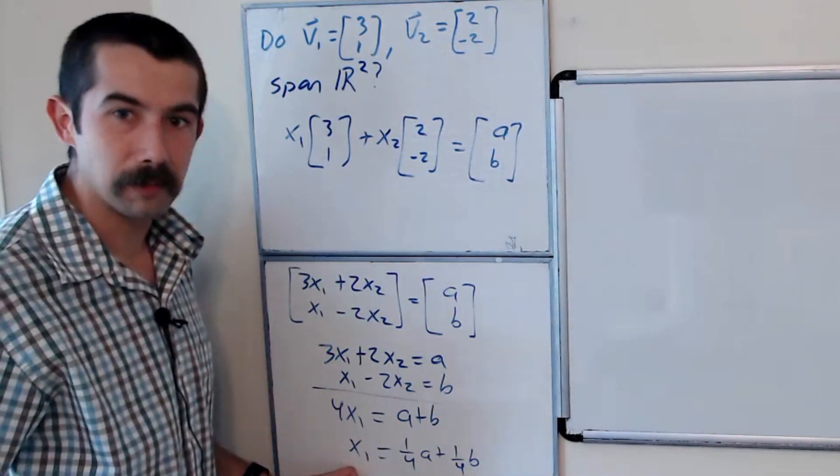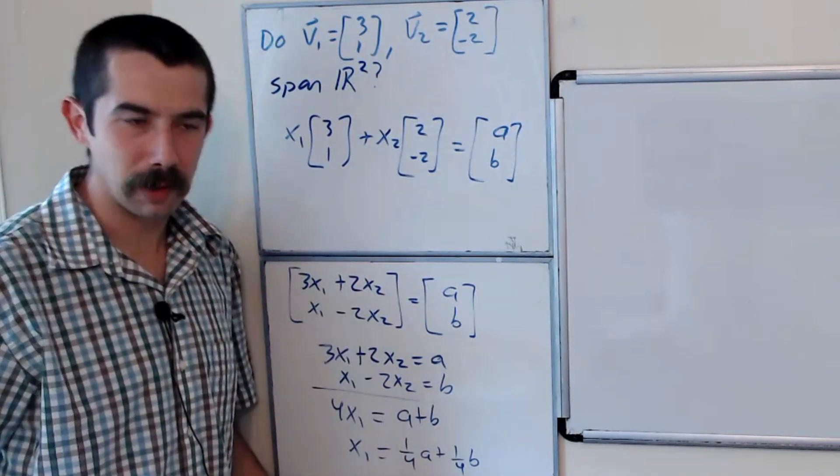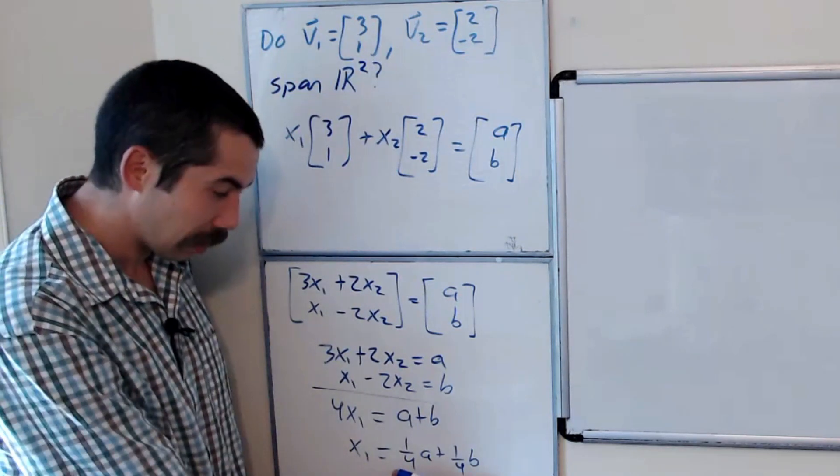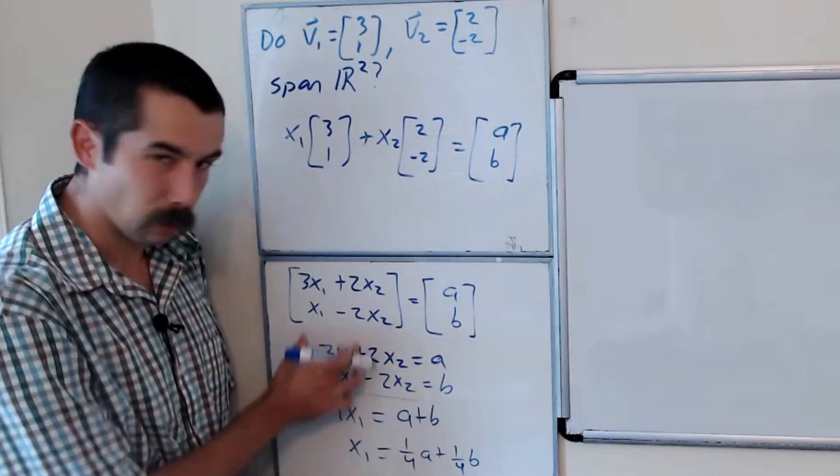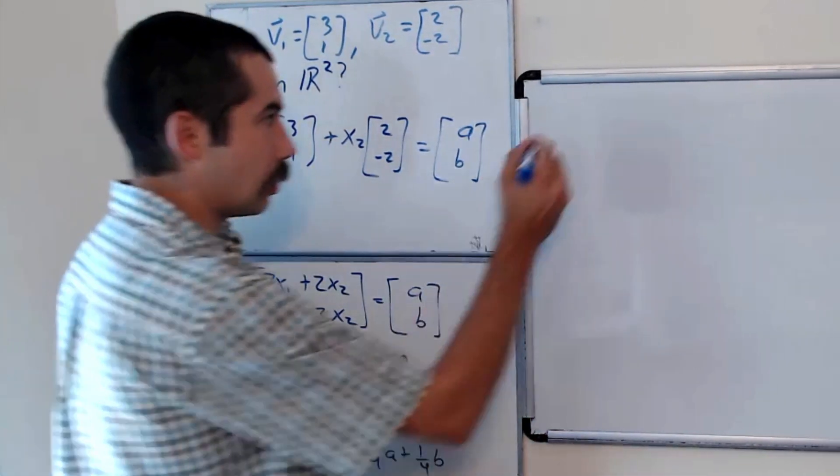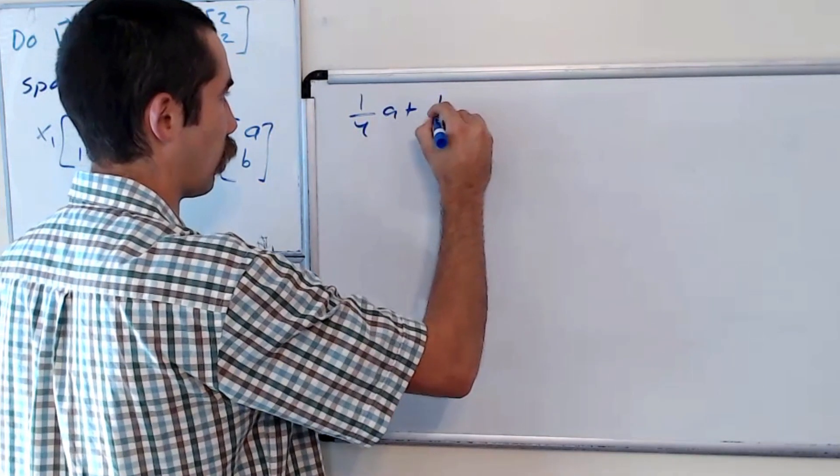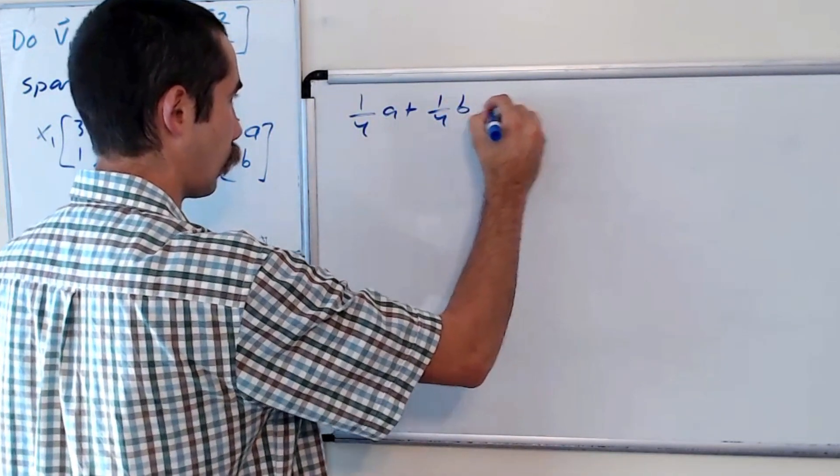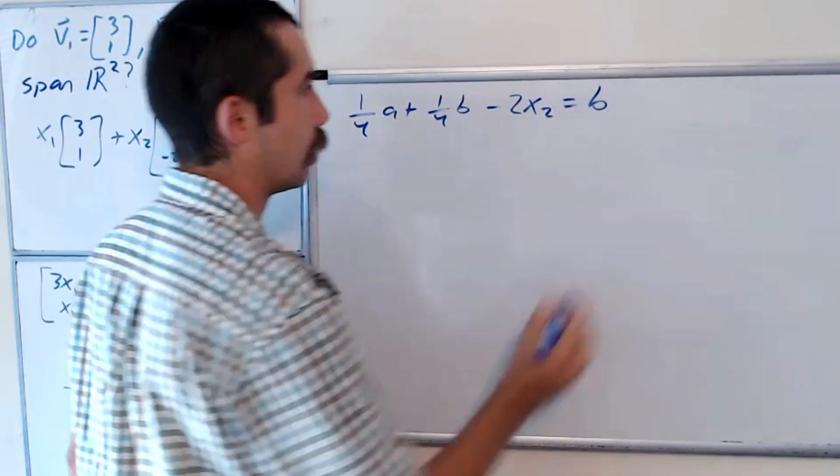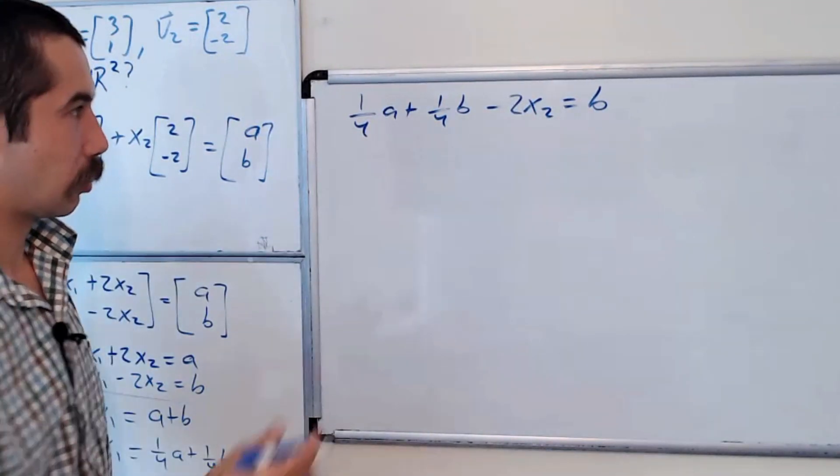So we got x1 in terms of a and b. Now we want to get x2 in terms of a and b. So what we could do is plug in this value for x1 into one of the equations. And I think the second equation would be easier. So we have one-fourth a plus one-fourth b minus 2x2 equals b, and so we can solve for x2.